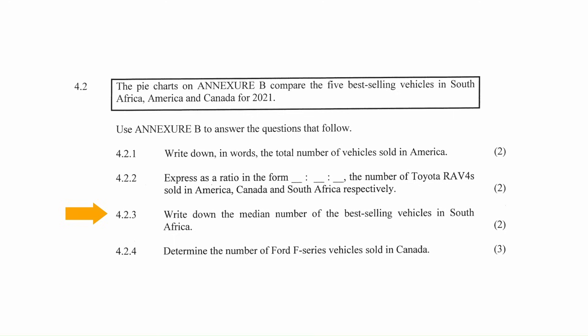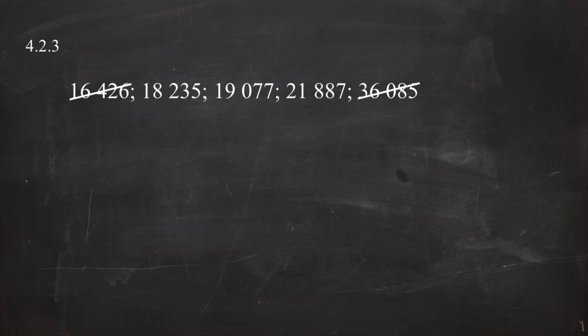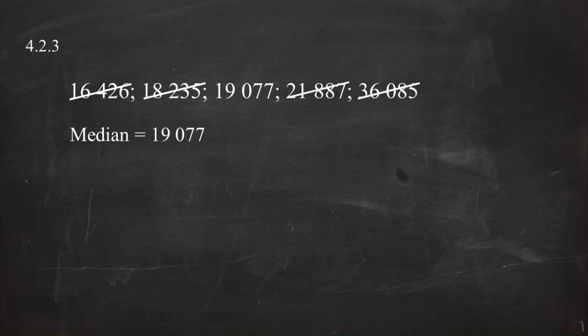In question 4.2.3, you are instructed to write down the median number of best-selling vehicles in South Africa. The median is the number that divides the data set into two equal groups. First, arrange the values in ascending order. From the South Africa pie chart, the values are arranged in ascending order from the Isuzu D-Max at 16,426 to the Toyota RAV4 at 36,085. Systematically eliminating numbers from both ends of the data set gives a median value of 19,077.